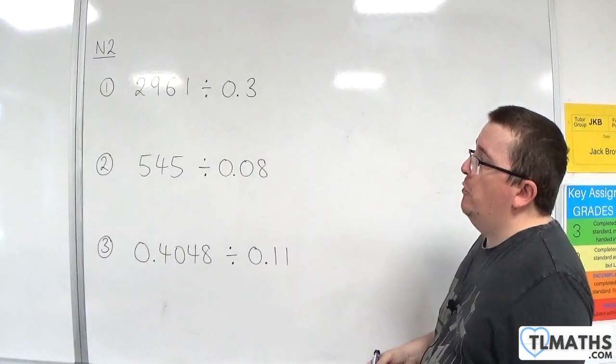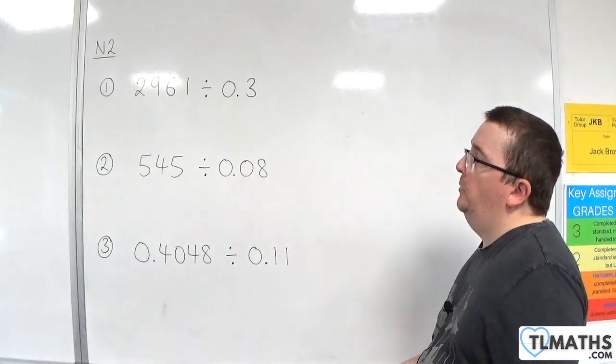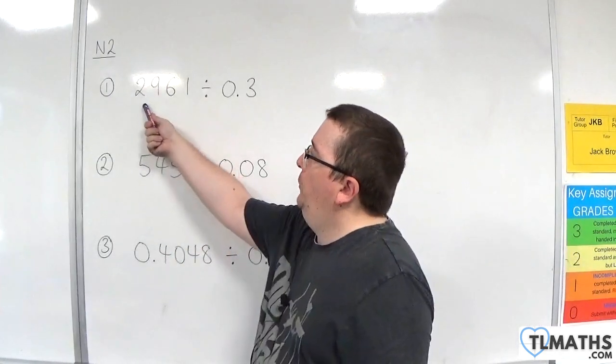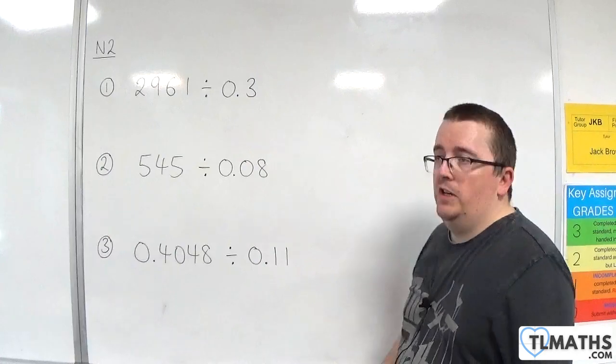In this video, we're going to go through three more examples of dividing by a decimal. First example: 2,961 divided by 0.3.